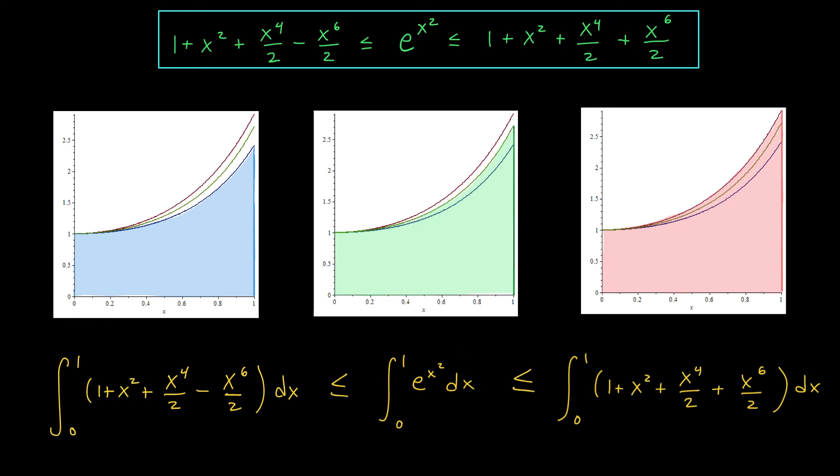So the integral of this function is a little bit more than the integral of our function. Oh, now would you look at this? We found two integrals that we can actually compute that sandwich the integral that we're interested in. By evaluating this expression on the left and this expression on the right, we get a range of possible values for the integral in the middle. On the next slide, we'll take a closer look at these bounds and try to identify the maximum error in our approximation.